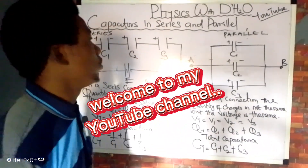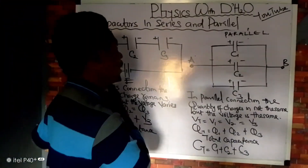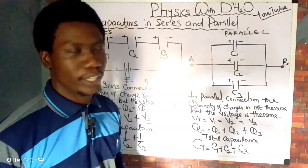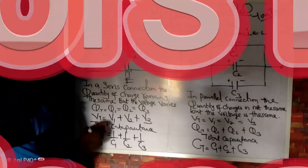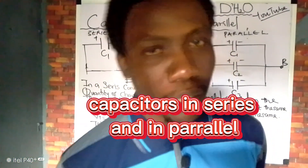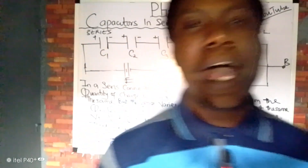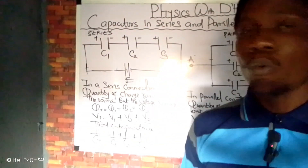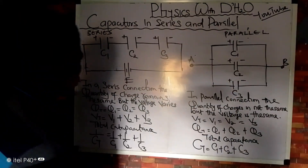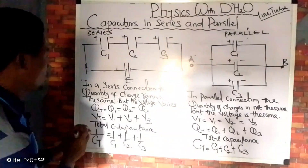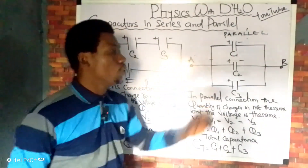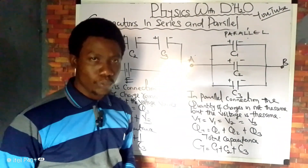In today's lesson we are going to be looking at what capacitors in series and what in parallel. How do I solve problems involving capacitors in series and in parallel? We have a sketch on the board — this collection of capacitors here is in series and this one is in parallel. How do we know that a capacitor is in series?